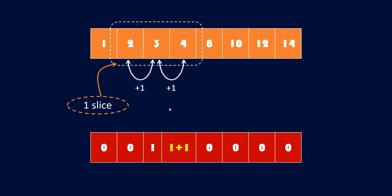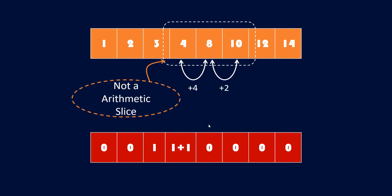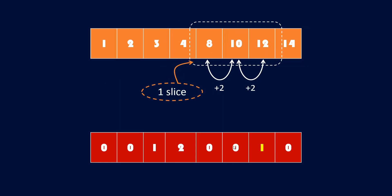Continuing the example, here the difference is 1 for one pair and 4 for another, so this is not an arithmetic slice and remains 0. Moving forward, the difference from 4 to 8 is 4, but from 8 to 10 is 2, so this is also not an arithmetic slice and stays 0. Next, the differences are equal, so we compute i-1 plus 1, giving us 1.